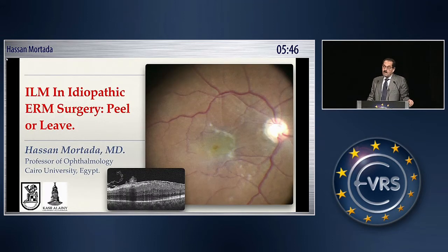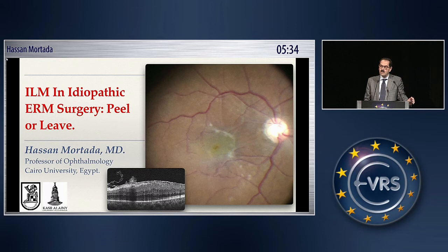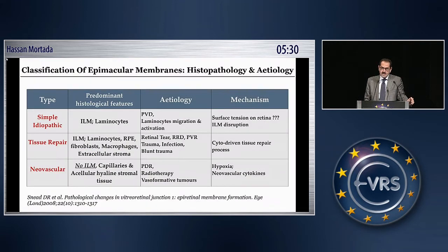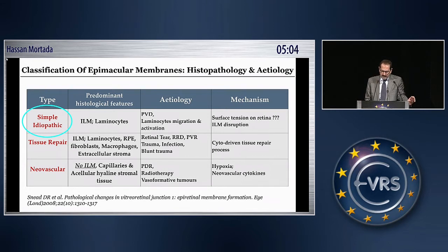We start with the epiretinal membrane, and I would like to discuss it from the aspect of whether you are going to peel the internal limiting membrane or peel the epimacular membrane. The classification of epiretinal membranes: our concern is the simple or idiopathic epimacular membrane, where the predominant histological features are ILM and laminocytes. The etiology occurs with PVD due to minute ruptures in the internal limiting membrane and migration of laminocytes. Other epimacular membranes occur due to tissue repair, as in PVR and trauma, or are neovascular, as in proliferative diabetic retinopathy.